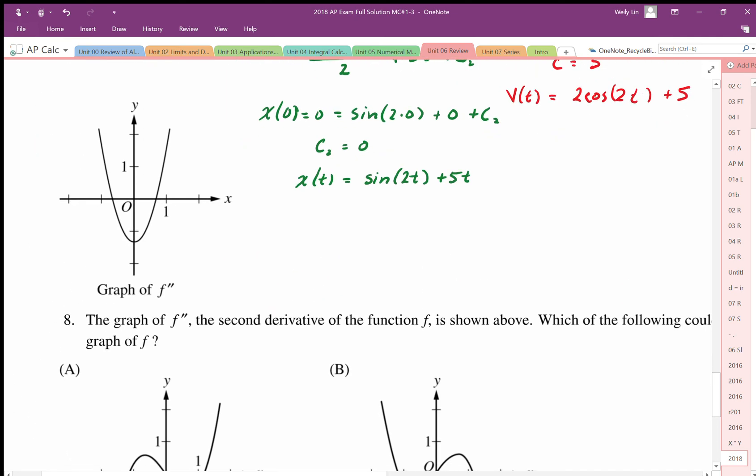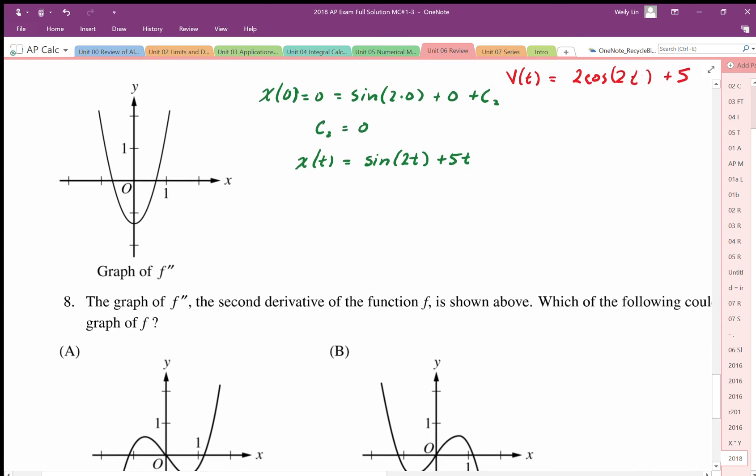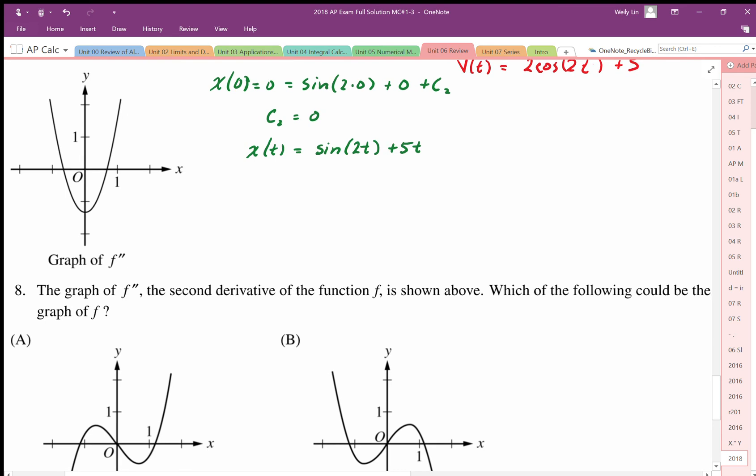For number 8, we've been given the derivative, second derivative function. So we're being asked about the original graph f. So this represents the second derivative of f. The key part that we're going to analyze here is those zeros there. And these represent zero concavity or potential inflection points.